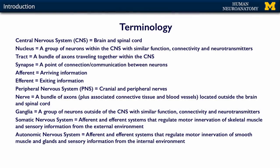The somatic nervous system is all of the afferent and efferent systems that regulate the motor innervation of your skeletal muscles and the sensory information from your external environment. When we're talking about the somatics, we're talking about the part of the nervous system of which you're aware — you know where the mosquito bit you, you're able to dance and jump up and down. Those are all voluntary or very finely localized sensations. That's our somatic nervous system.